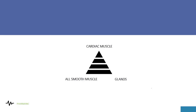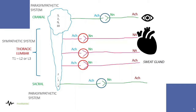Regarding the organization of the sympathetic and parasympathetic systems: nerves originating from the thoracic and lumbar regions form the sympathetic system, while nerves originating from the cranial and sacral regions form the parasympathetic system. In the parasympathetic system the preganglionic fiber is longer than the postganglionic fiber, whereas in the sympathetic system the preganglionic fiber is shorter and the postganglionic fiber is much longer.